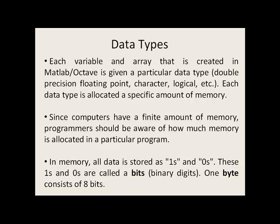Each variable and array that is created in MATLAB and Octave is given a particular data type. In this class we've discussed double precision floating point variables, character variables, and logical variables, but there are many more different data types. Each data type is allocated a specific amount of memory. Since computers have a finite amount of memory, programmers should always be aware of how much is being allocated to the various variables and arrays created in a particular program.